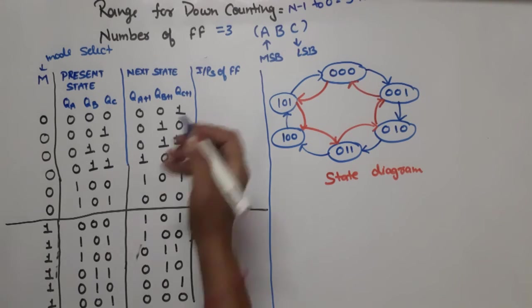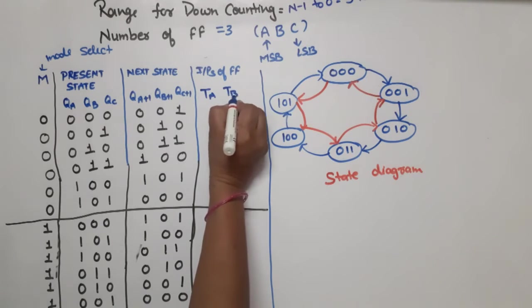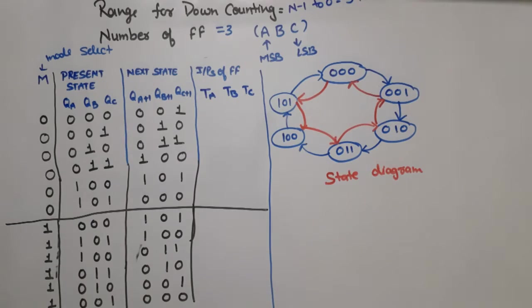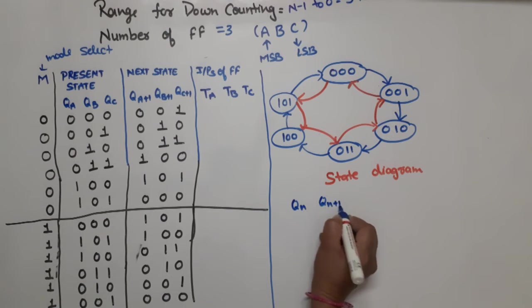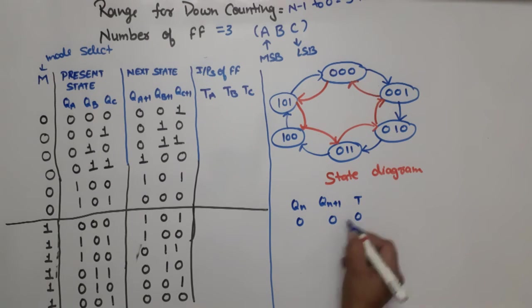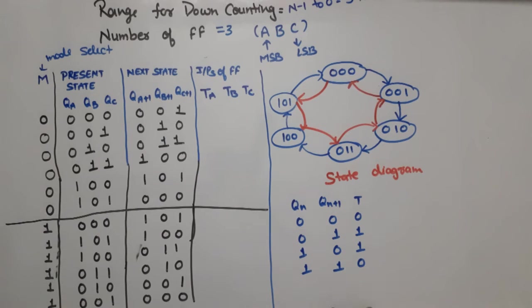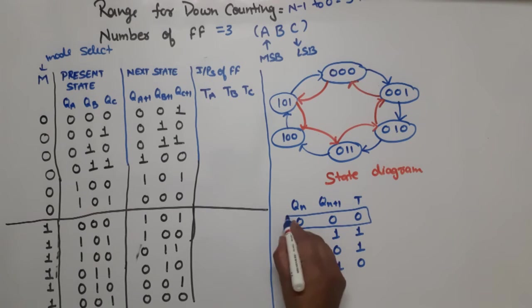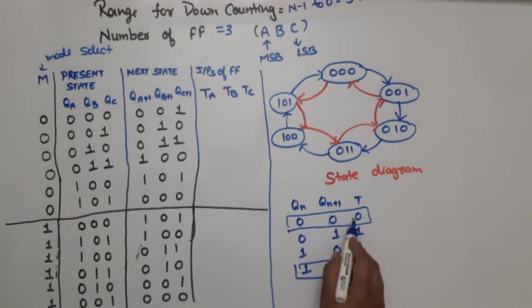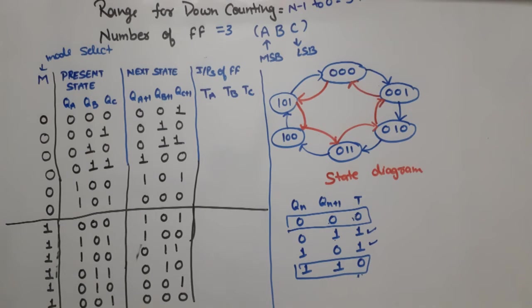Now, since we are using T flip-flops, we need to know the excitation table. The T flip-flop excitation table is: if Qn=0 and Qn+1=0, T=0 (no change); if Qn=0 and Qn+1=1, T=1 (toggle); if Qn=1 and Qn+1=0, T=1 (toggle); if Qn=1 and Qn+1=1, T=0 (no change). So if present state and next state are the same, T=0; if they change, T=1.